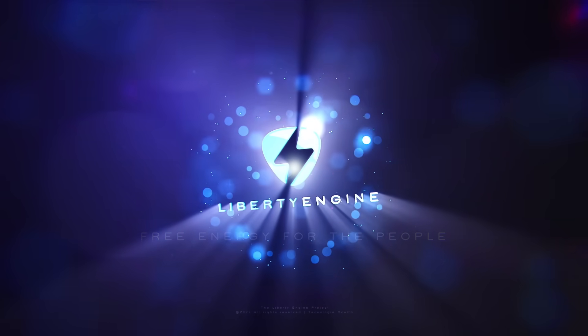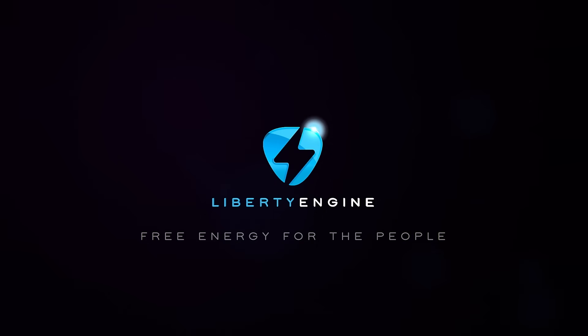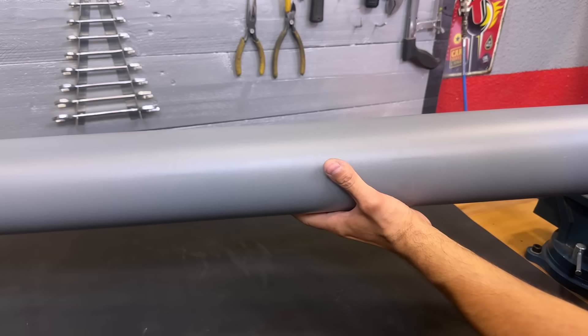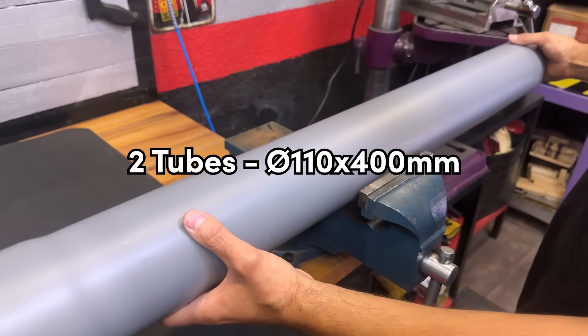Stay until the end of the video to see how we made this water pump that works without electricity. We start by cutting two PVC pipes with a diameter of 110 for 400 millimeters.